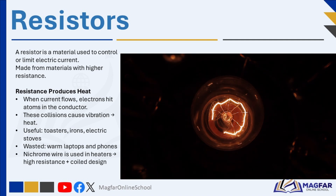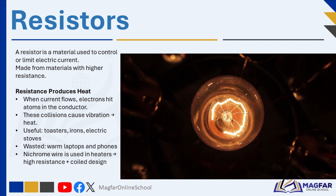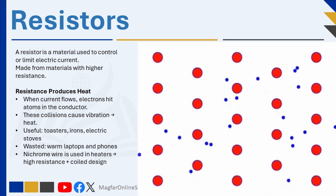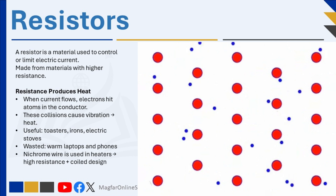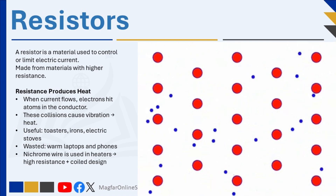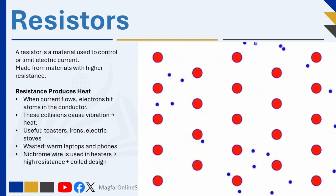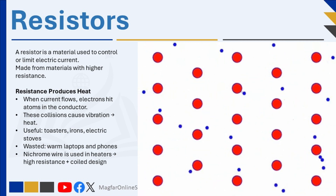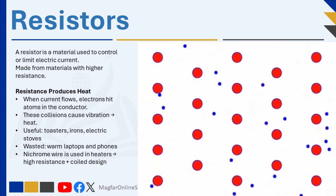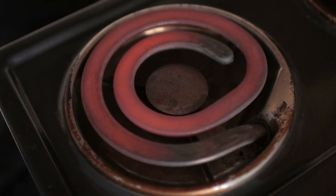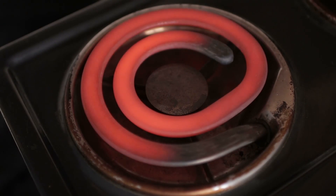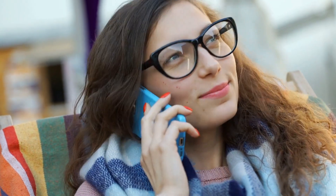As electric current flows through a conductor, the moving electrons collide with atoms inside the material. These collisions cause the atoms to vibrate, producing heat. This is why conductors, even good ones, warm up when current passes through them. Sometimes this heat is useful, like in a toaster or an iron. Other times it's just wasted energy — for example, computers and phones get warm when they are used because of this heat loss.